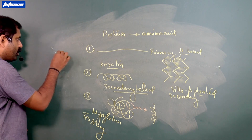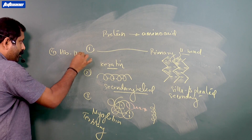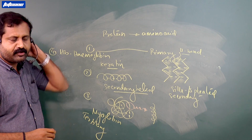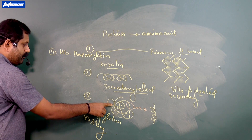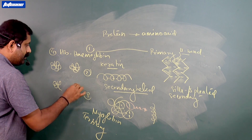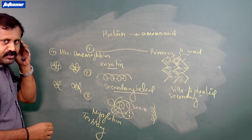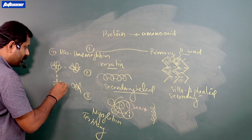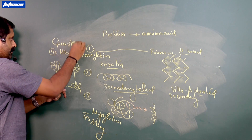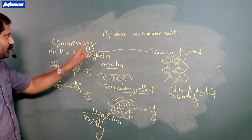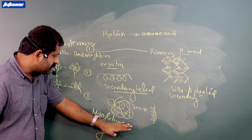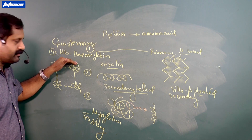In the case of hemoglobin — HB — which is the oxygen-transporting pigment found inside your RBC, four such tertiary bowl-shaped proteins are connected together by hydrogen bonds. This highly complicated structure is called the quaternary structure. So we have primary, secondary, tertiary, and quaternary — the quaternary being the most complicated structure, as seen in hemoglobin.